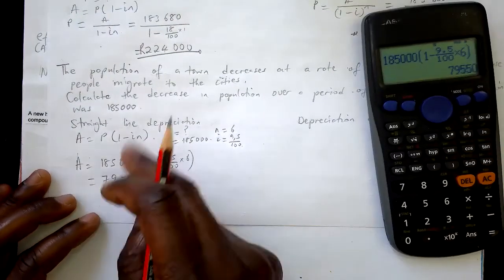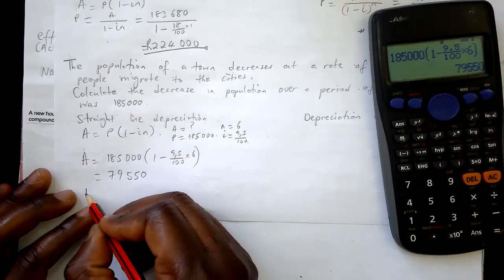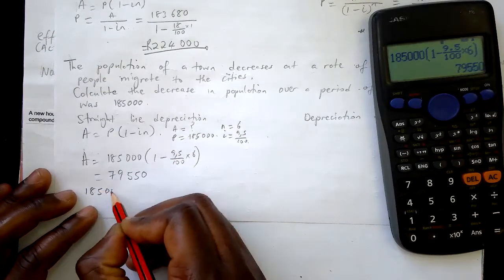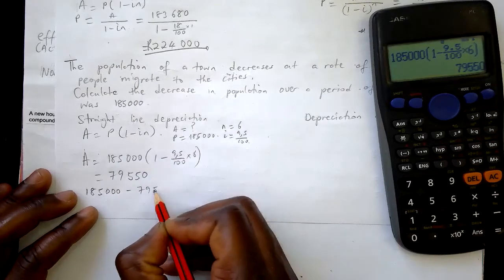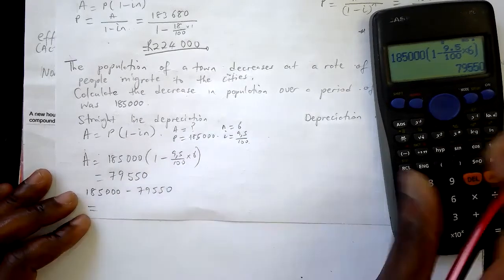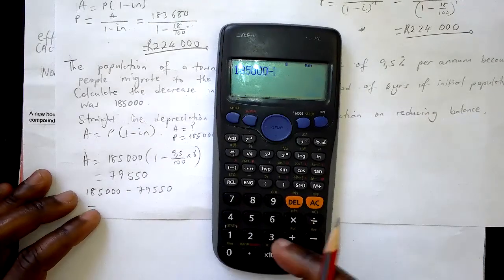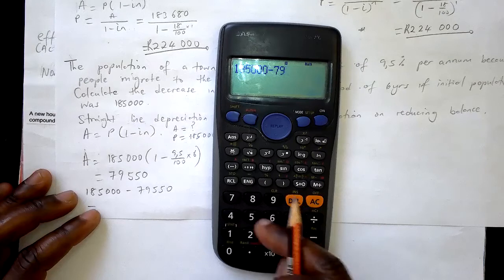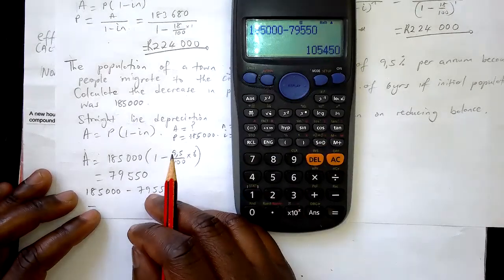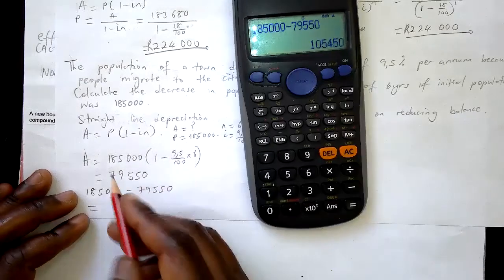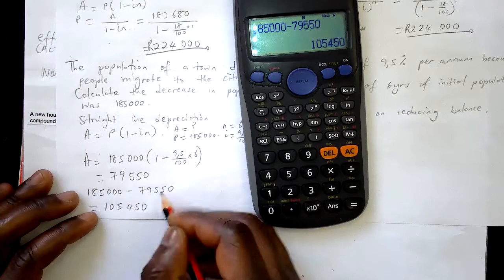The decrease in population is 185,000 minus 79,550, which equals 105,450 people. So 105,450 people have left the city for straight-line depreciation.